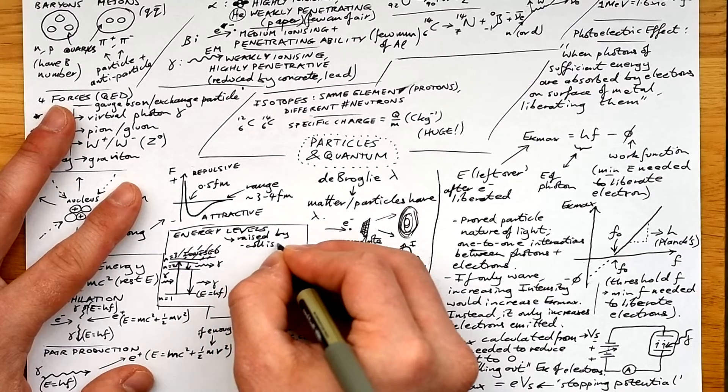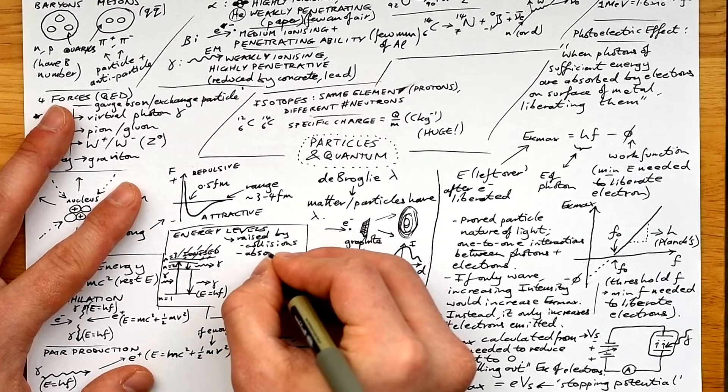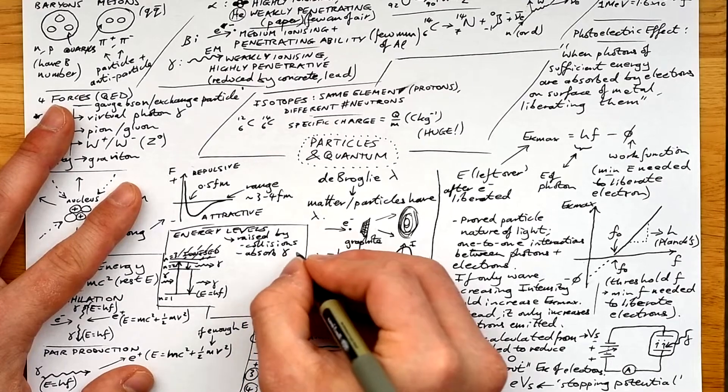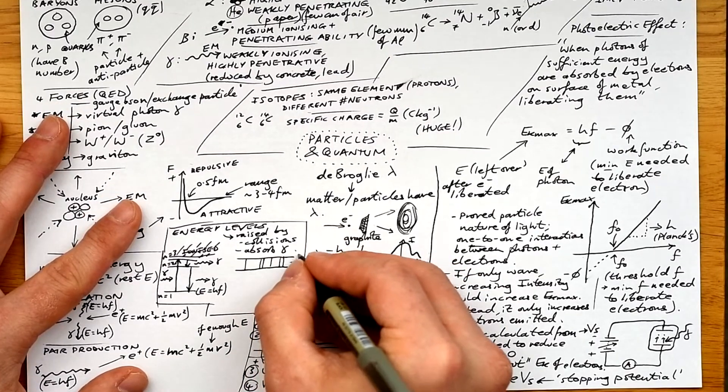We have the ionization level. If enough energy is given to an electron, then it will escape an atom or molecule completely. We have absorption and emission spectra.